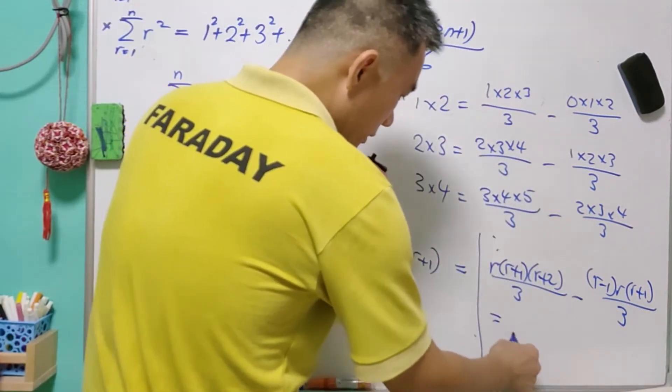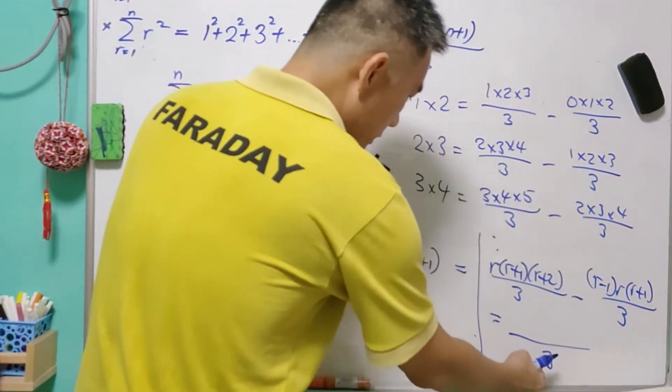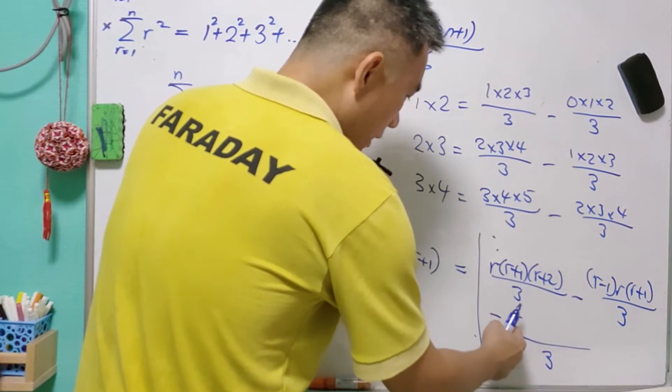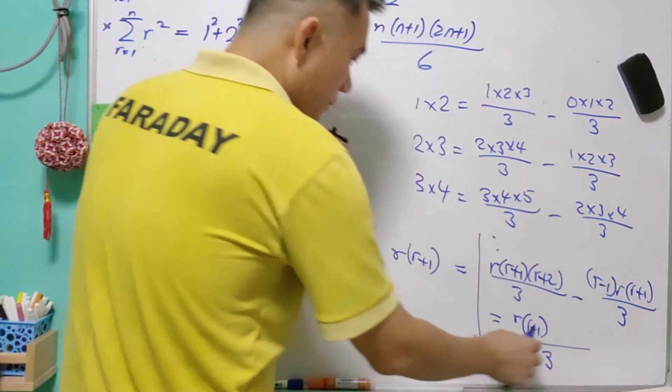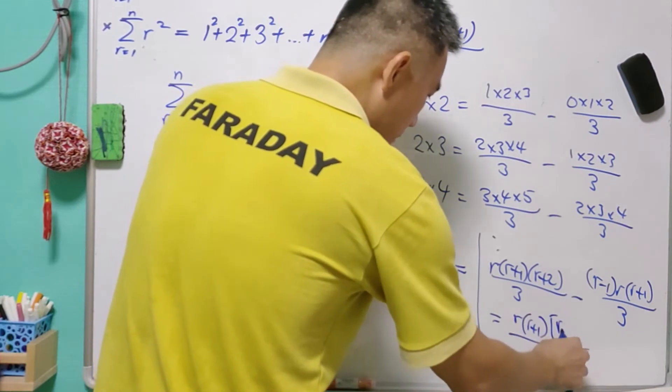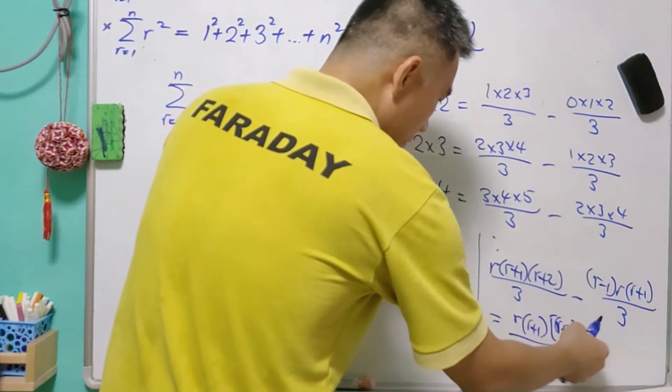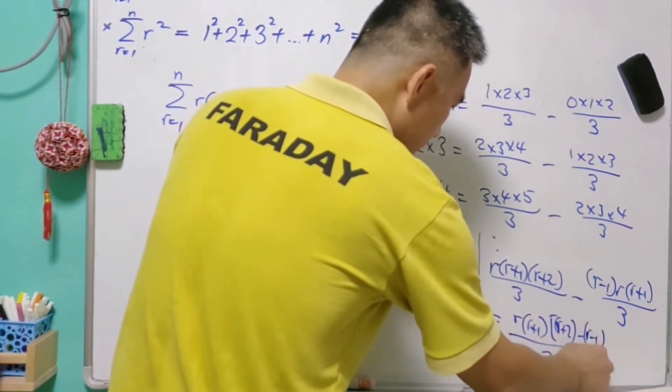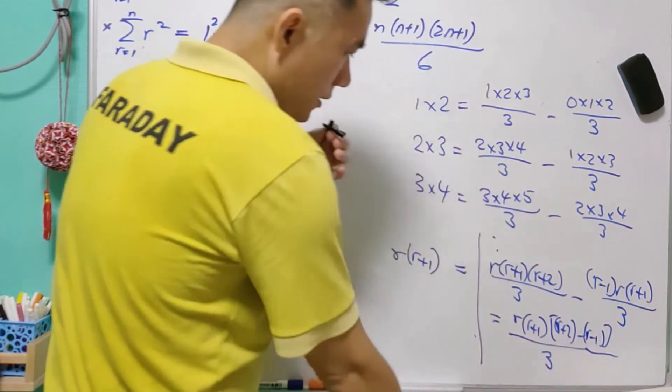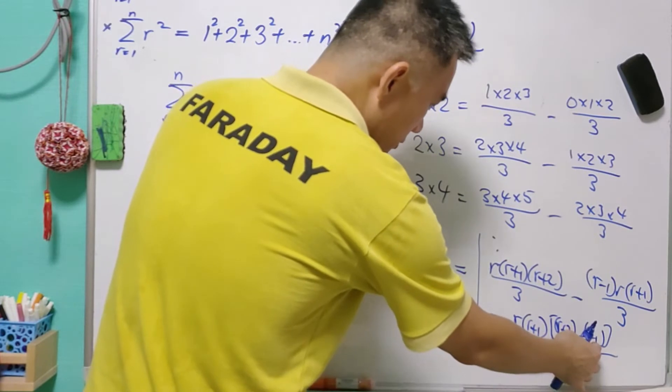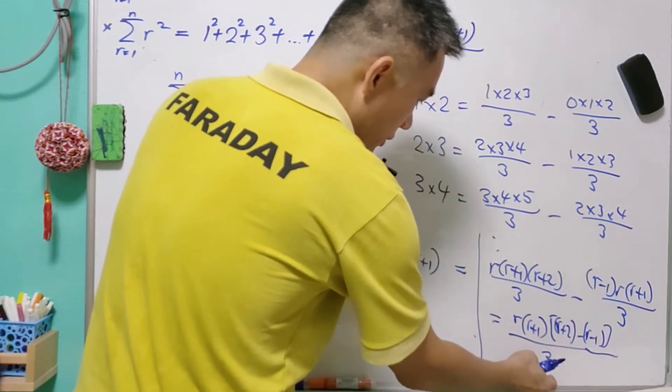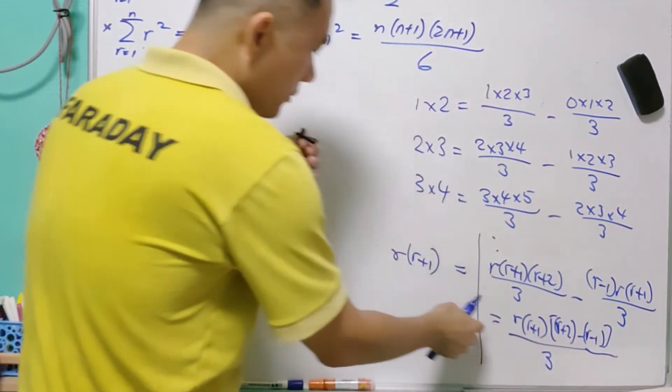We have a common 3 as denominator, r as numerator, r+1 as numerator. And what we left here is r+2 minus r-1. Then we see that r minus r cancel off, 2 minus negative 1 is 3. 3 and 3 cancel off. Then we left with r and r+1. That's right.